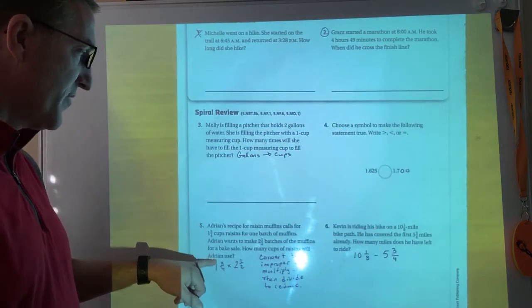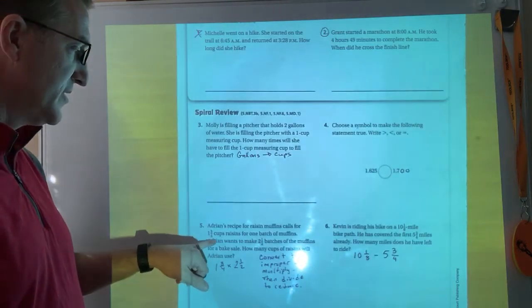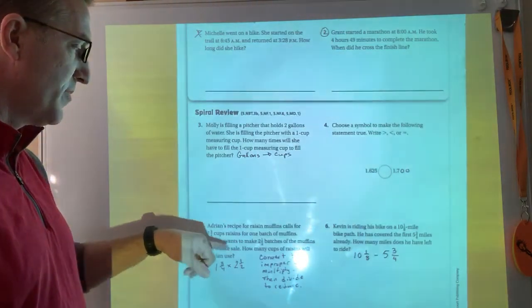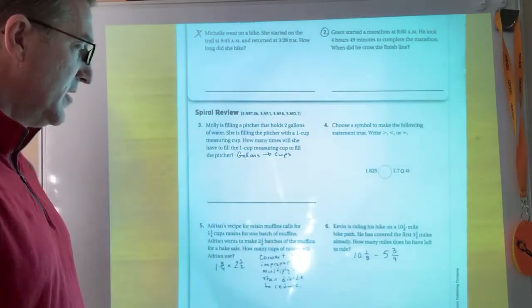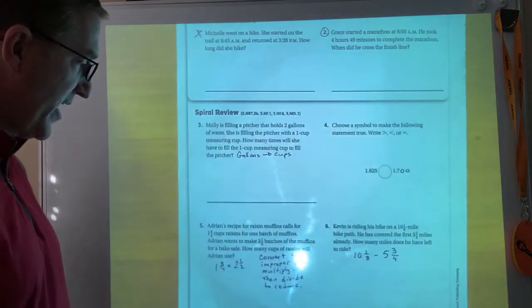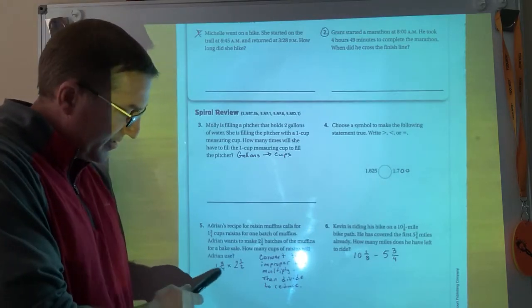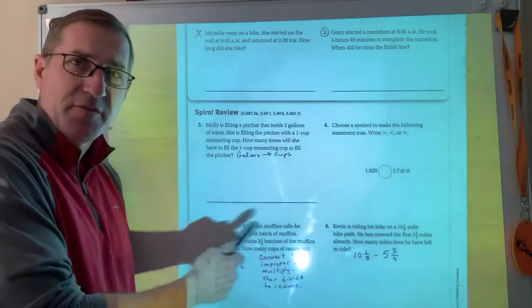And then here, Adrian's recipe for raisin muffin calls for 1 3⁄4 cups raisins for one batch of muffins. Adrian wants to make 2 1⁄2 batches. So he's going to do it 2 1⁄2 times. And then I ask you how many cups of raisins will Adrian use. Well, it's 1 3⁄4 times 2 1⁄2, the number of batches.